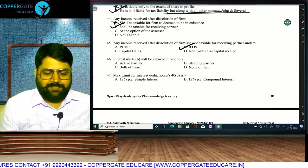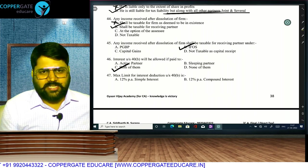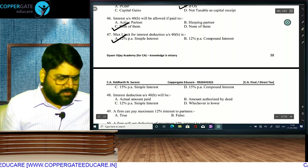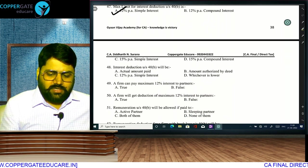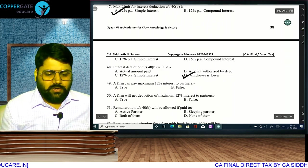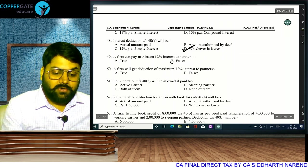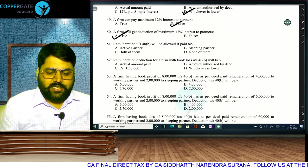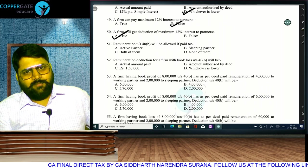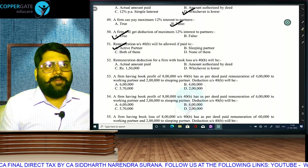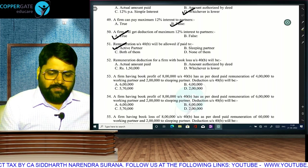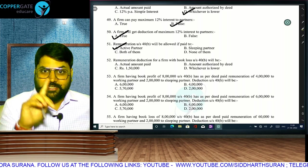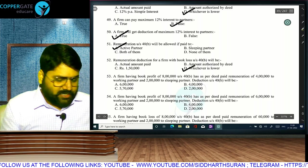Interest under 40B is allowed if paid to both active and sleeping partners, subject to 12% per annum simple interest. Maximum limit for interest deduction under 40B: 12% per annum simple interest — whichever is lowest among actual amount, amount as per deed, and 12% per annum. A firm can pay more but gets deduction of maximum 12%. Remuneration under 40B: allowed only if paid to active (working) partners. Any remuneration paid to sleeping partner is fully disallowed.